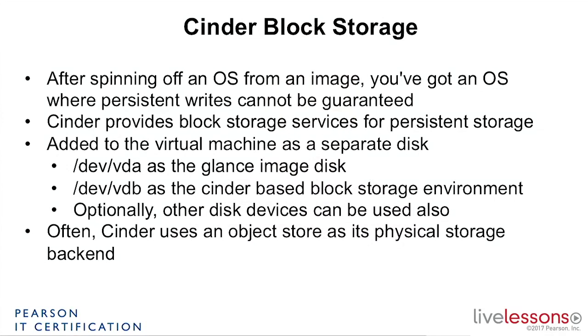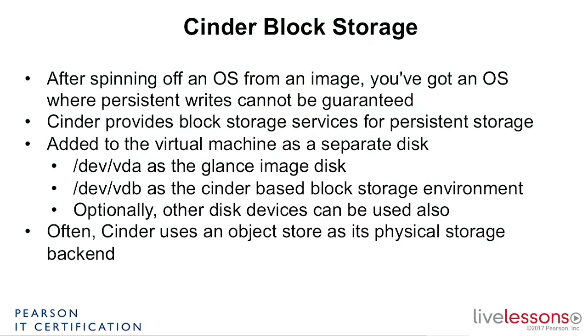The next part of the cloud is Cinder. Why do we need Cinder block storage? That is because after spinning off an operating system from an image, you have an operating system where persistent writes cannot be guaranteed. You can write after spinning off an instance from a Glance image, but the problem is that the write is local to the machine currently hosting the instance. If it's moved around, the write will be gone — so the write cannot be guaranteed. That is why you need Cinder block storage.